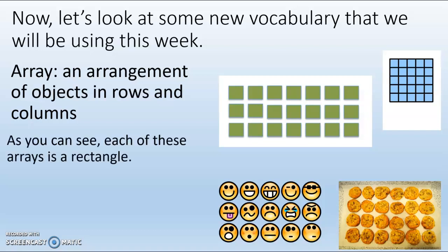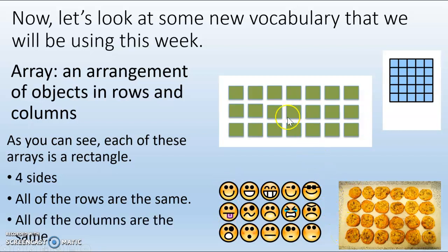As you can see each of these arrays is a rectangle. Each of these has four sides. All of the rows are the same in each rectangle, and all of the columns are the same in each rectangle. So it's important that all of the rows and the columns are the same, and it has to have four sides because it's a rectangle.